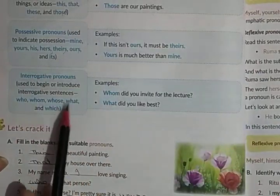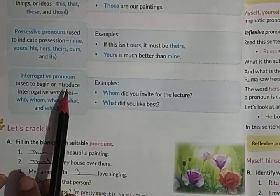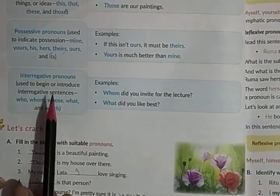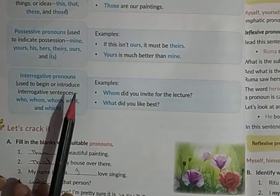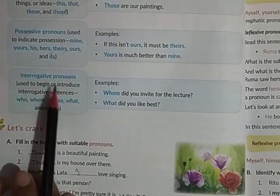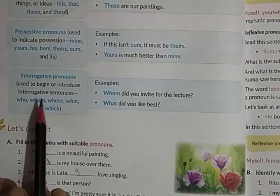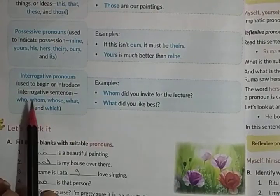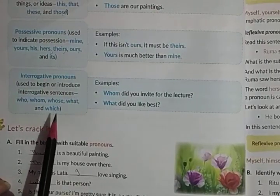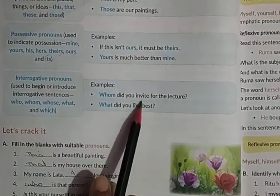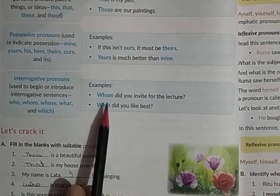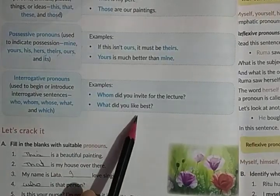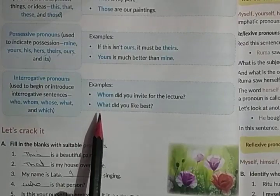Interrogative pronouns are very easy — they are used to begin or introduce interrogative sentences, that is, to ask questions. The examples are WH words: who, whom, whose, what, and which. For example: 'Whom did you invite for the lecture?' — here 'whom' is an interrogative pronoun. 'What did you like best?' — 'what' is an interrogative pronoun.